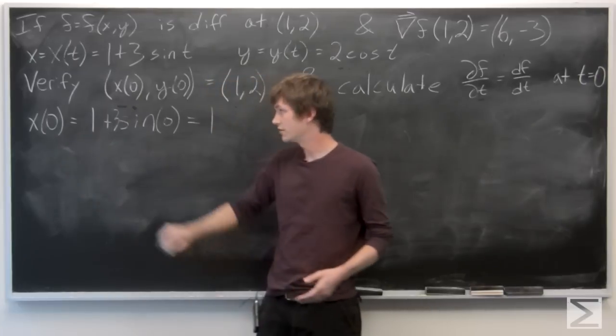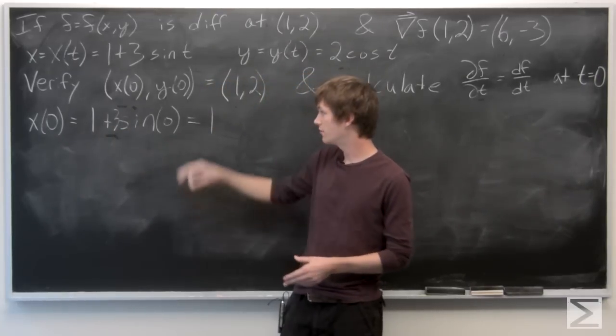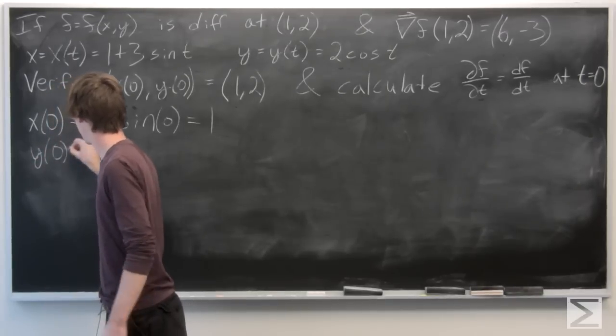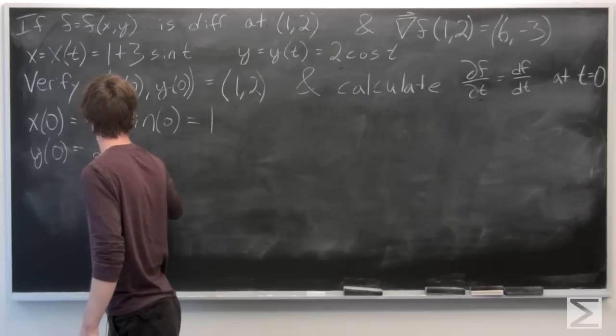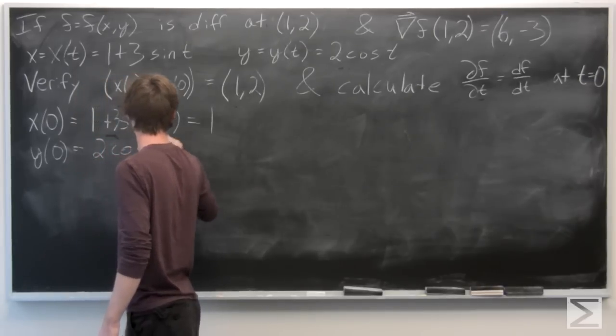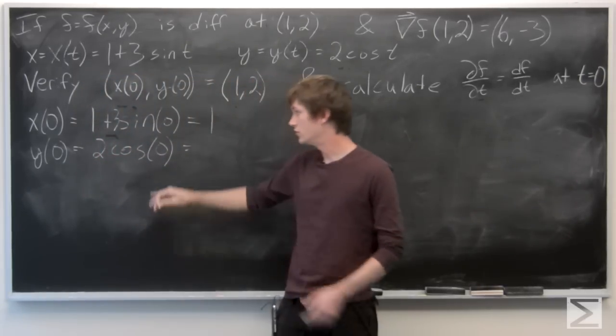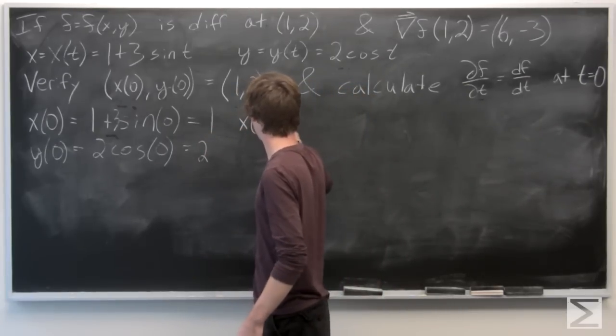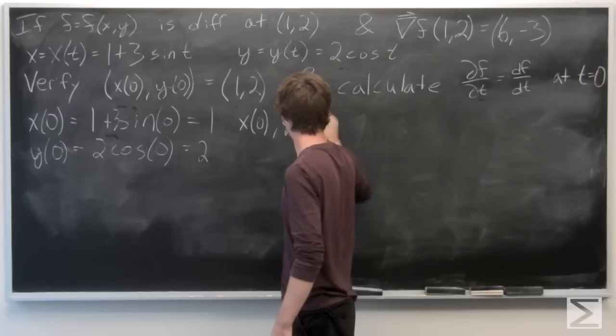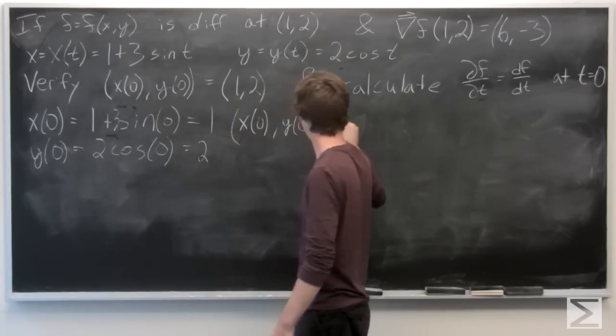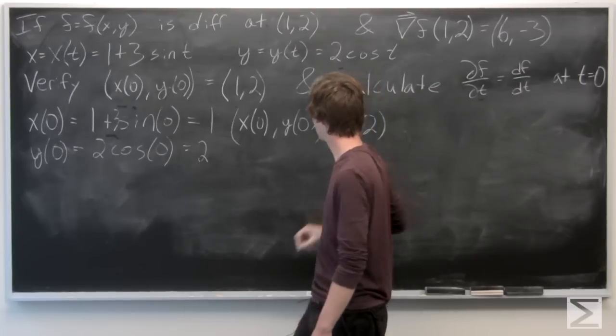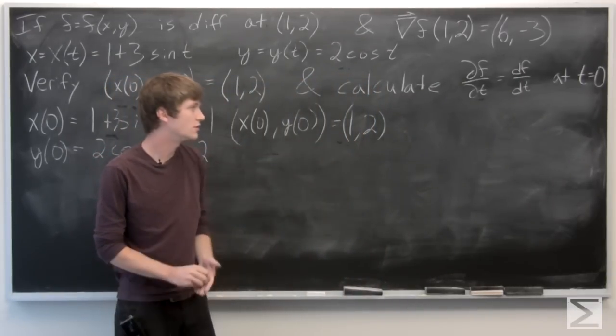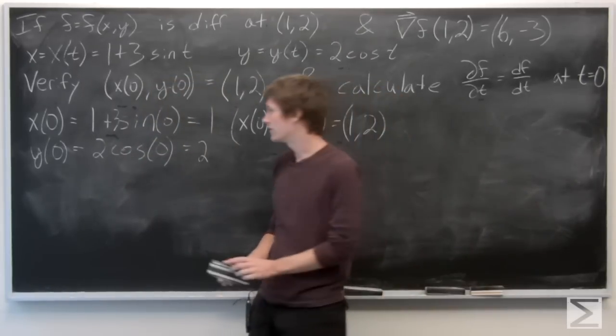We see that x of 0 is equal to 1 plus 3 times sine of 0, which is equal to 1. Y of 0 equals 2 cosine 0, which is 2. So x of 0 and y of 0 is equal to the point (1, 2). So that verifies the first part.